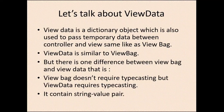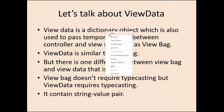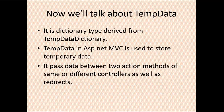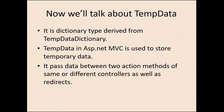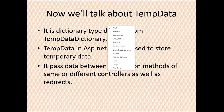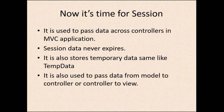Now we'll talk about TempData. It's also a dictionary type derived from the TempDataDictionary class. TempData in ASP.NET MVC is used to store temporary data. The key difference from ViewData is that ViewData passes data from controller to view, but TempData is used to pass data between two controllers. It also works with redirects — if you want to redirect to any particular action method, you can use TempData.